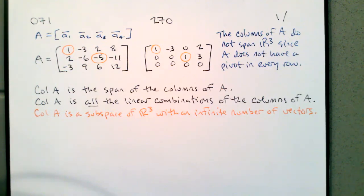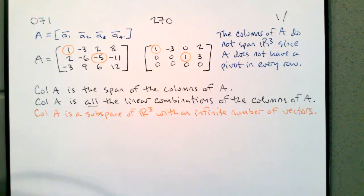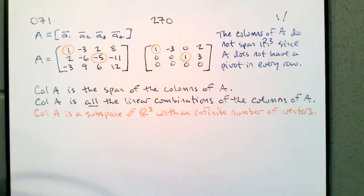The columns of A do not span R3 since A does not have a pivot in every row. The columns of A is a set of vectors — that's what does the spanning. A is the matrix — that's what has the pivots. The column space of A is the span of the columns of A; that is, all the linear combinations of the columns of A. We see that the first and third vectors, A1 and A3, form a basis for the column space of A.